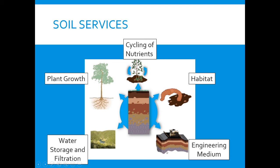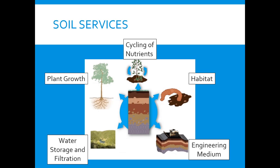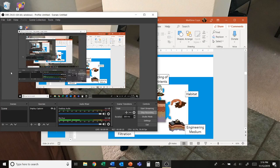Soil has its own ecosystem services: it cycles nutrients, provides habitat, can be a medium for engineering, stores and filters water, and allows an area for plants to grow. That brings us to the end of the second video — make sure you watch the third video when you're ready.